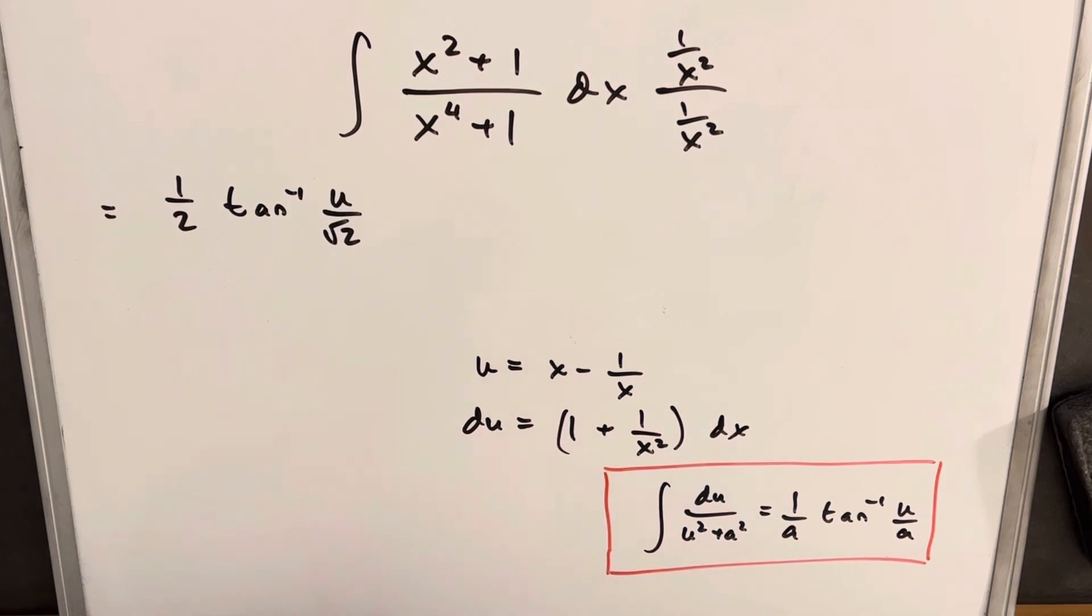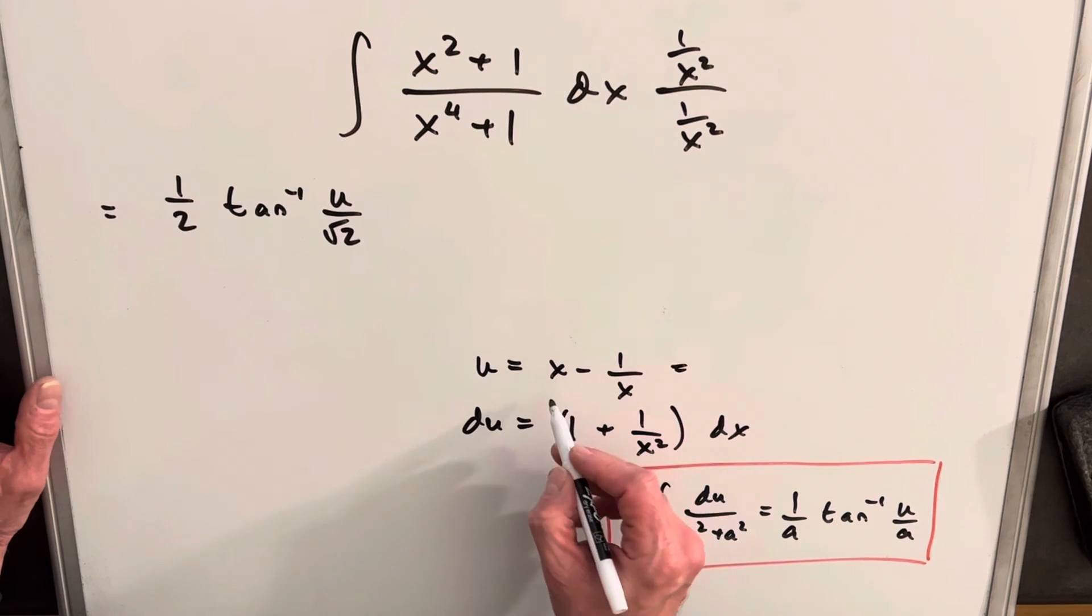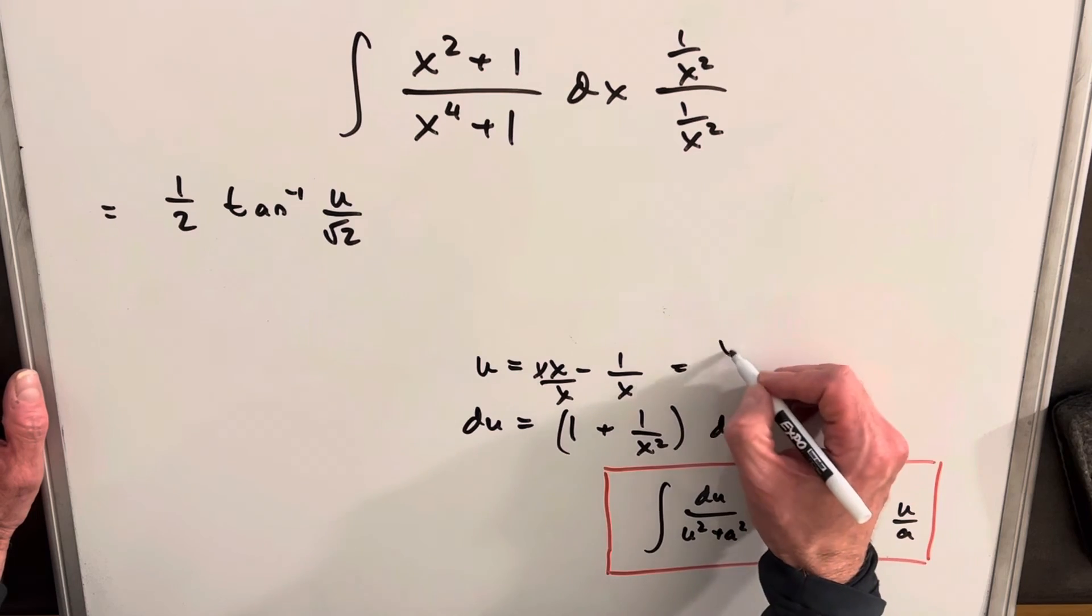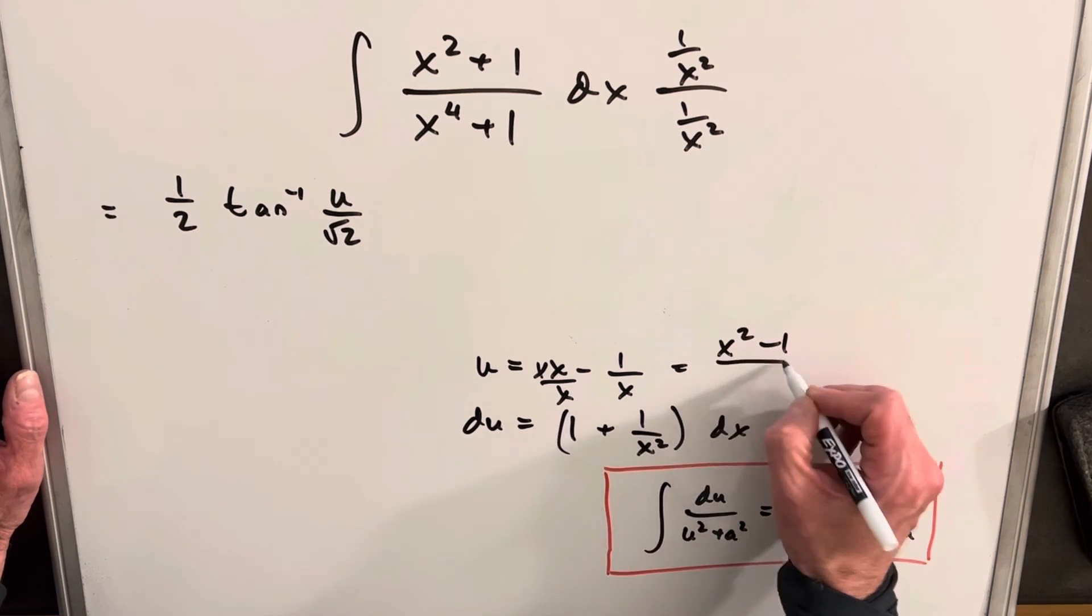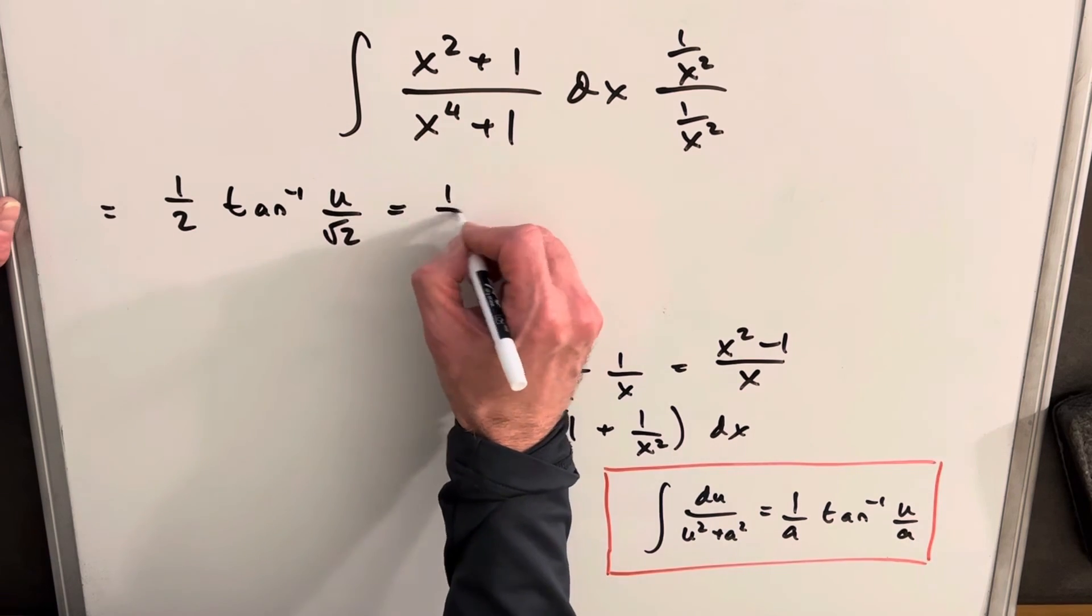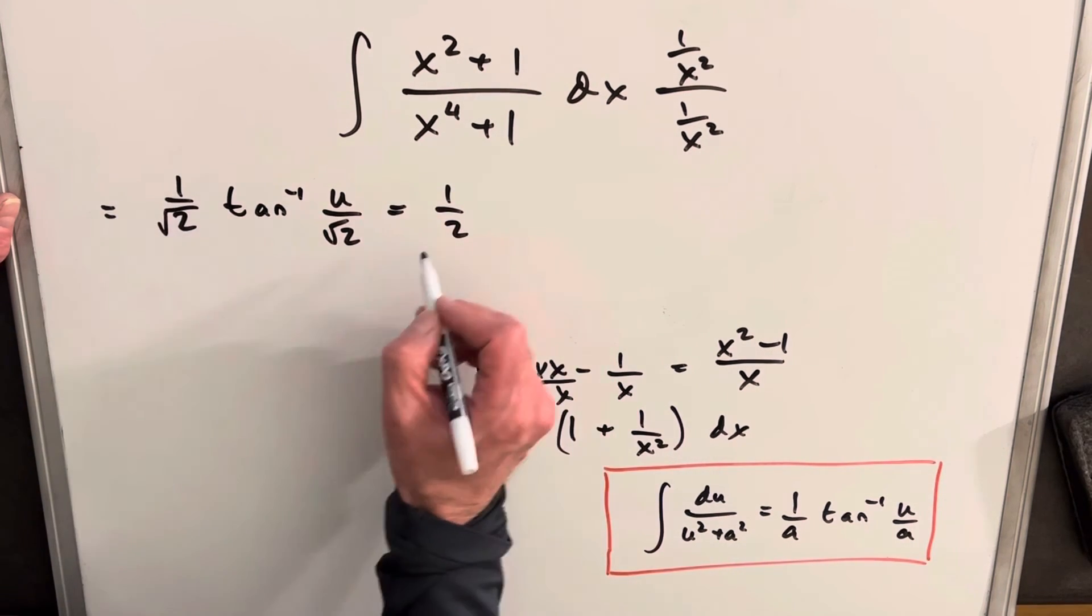Before I do my u substitution, let's just rewrite our u. I'm going to get a common denominator here. So we'll multiply by an x here on top and bottom, and then we're going to have x squared minus 1 over x. So now we'll go back for our final answer.